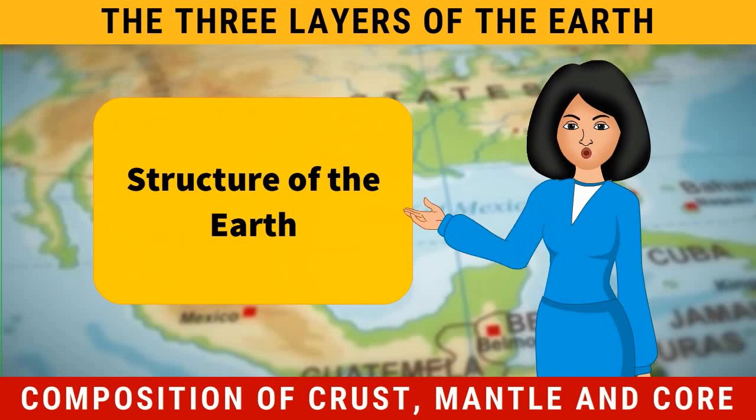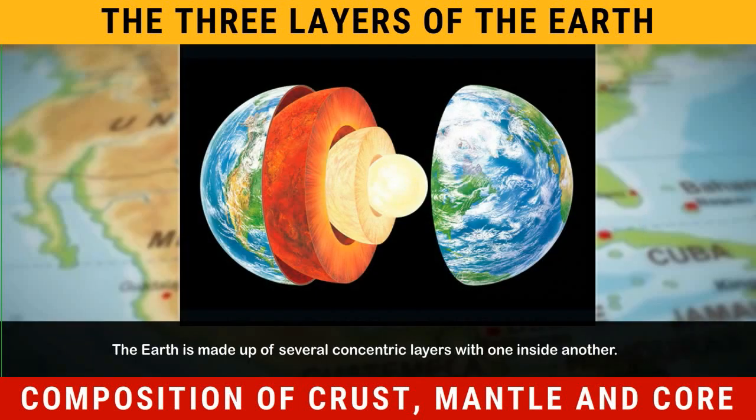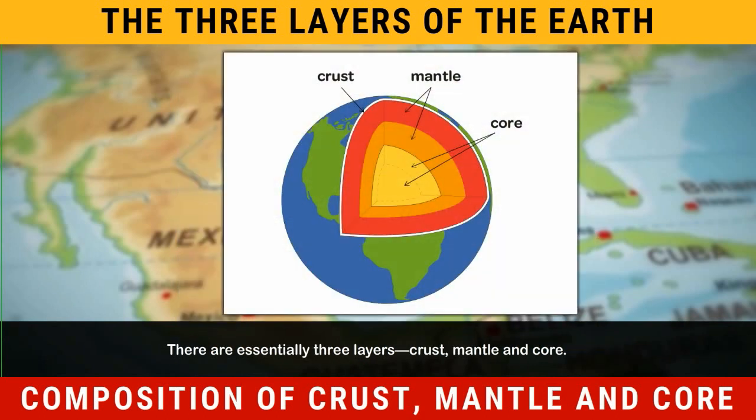The Earth is made up of several concentric layers, one inside another. There are essentially three layers: crust, mantle, and core.